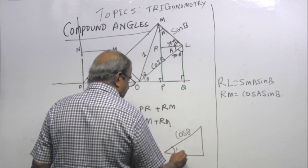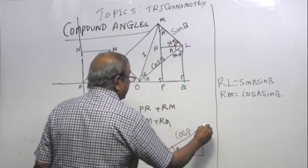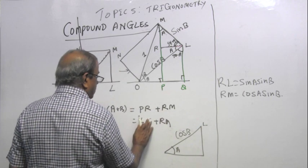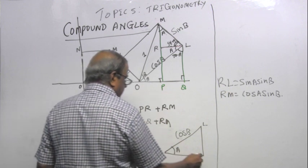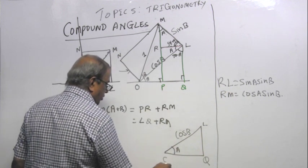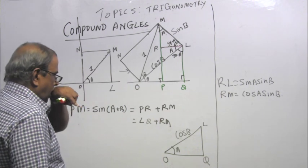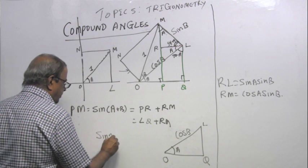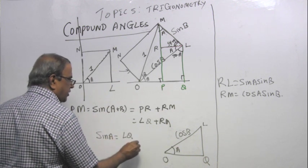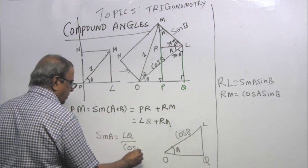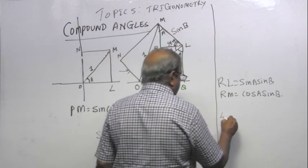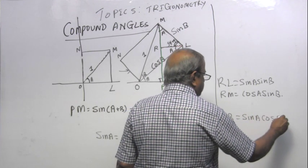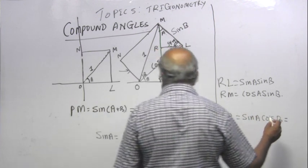RP is the same as LM, so I can write this as LM plus RM. I know RM but I do not know LM. Let me draw that triangle there. This is cos B, that is the angle A. This is L, that is Q, and that is O.